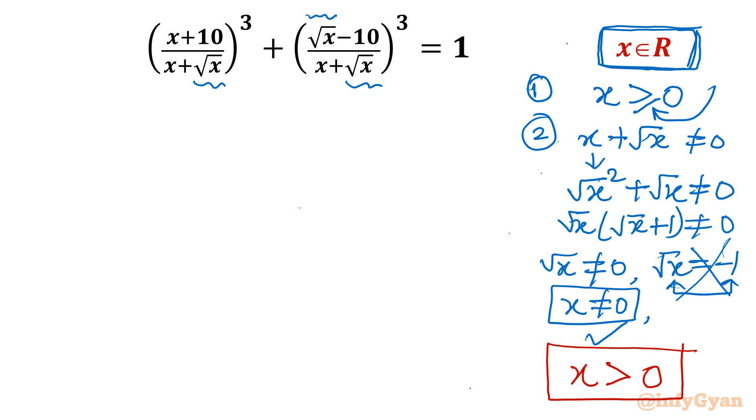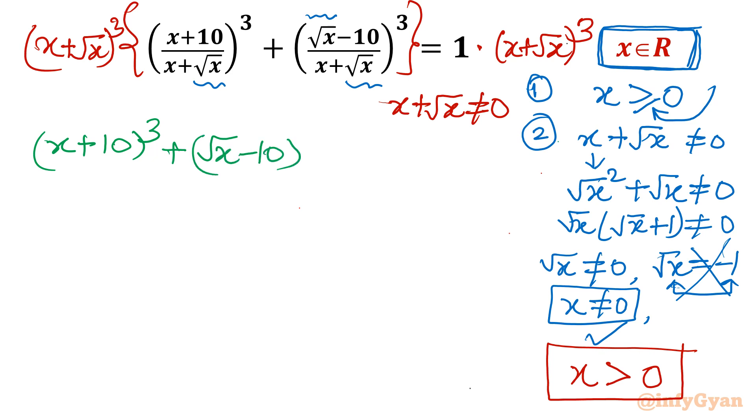Now come to our equation. x + √x is non-zero, so I can multiply both sides with (x + √x)³. See what will happen - denominator will be over. So after that: (x+10)³ + (√x-10)³ = (x+√x)³.